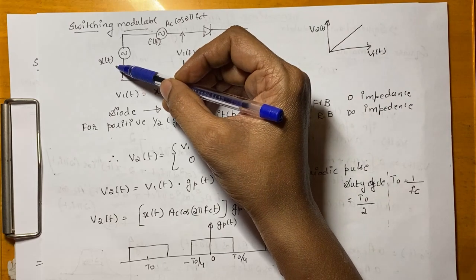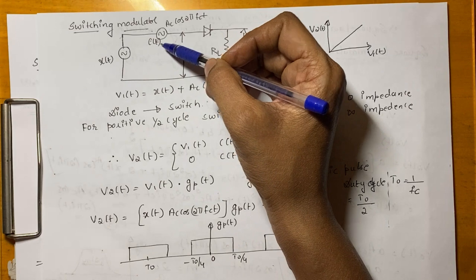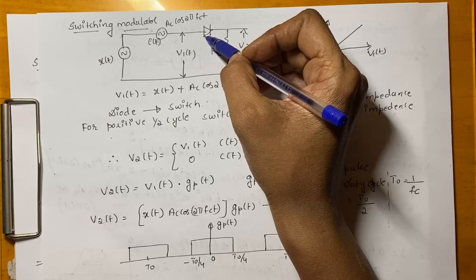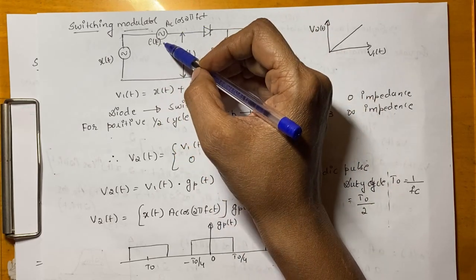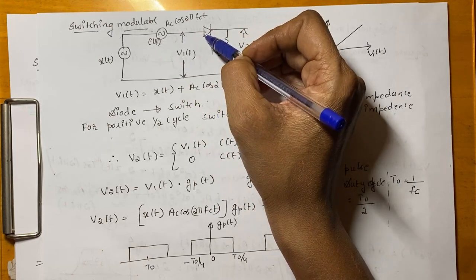One is the modulating signal X(t) and another one is the carrier signal C(t) which is represented as AC cos(2π FCT). This diode is acting as a switch. These two signals are being summed in a summer and that is being fed to an input of a diode.